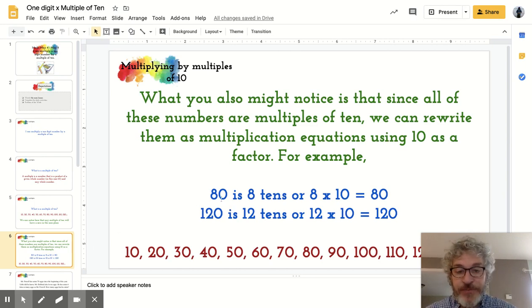For example, 80 is 8 tens or 8 times 10. Another way we can say that is 80 is 10 times greater than 8. 120 is 12 tens or 12 times 10. That equals 120. We can say 120 is 10 times greater than 12.